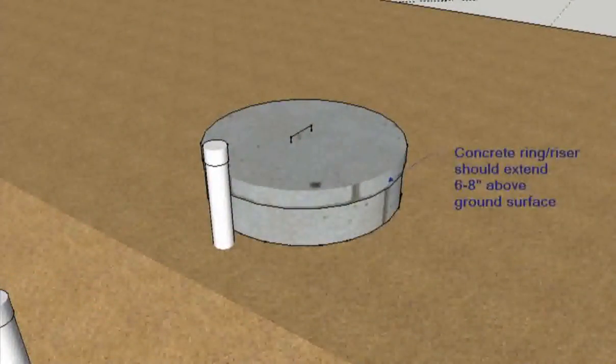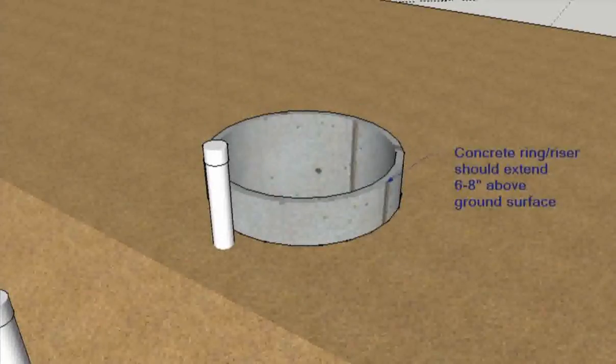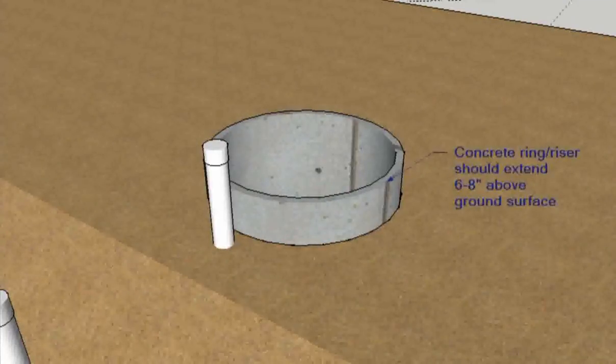Customers should take care to prevent rainwater runoff from contaminating their cistern. The top of the concrete ring should be at least 6 to 8 inches above the ground to prevent runoff from heavy rains from flowing into the cistern.